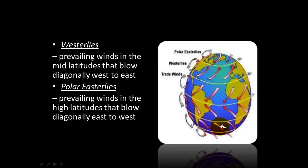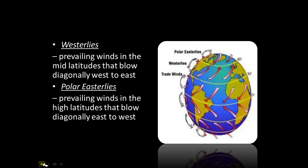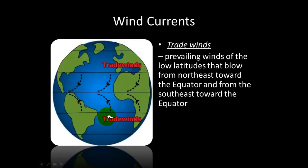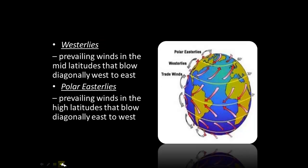To help remember these: for the polar easterlies, think 'polar' — polar bears, ice caps — it's cold, so these winds are near the north and south poles. The westerlies are the ones in the mid latitudes — commit those to memory. If you remember the trade winds in the low latitudes, it'll be easier to figure out the westerlies and the polar easterlies.